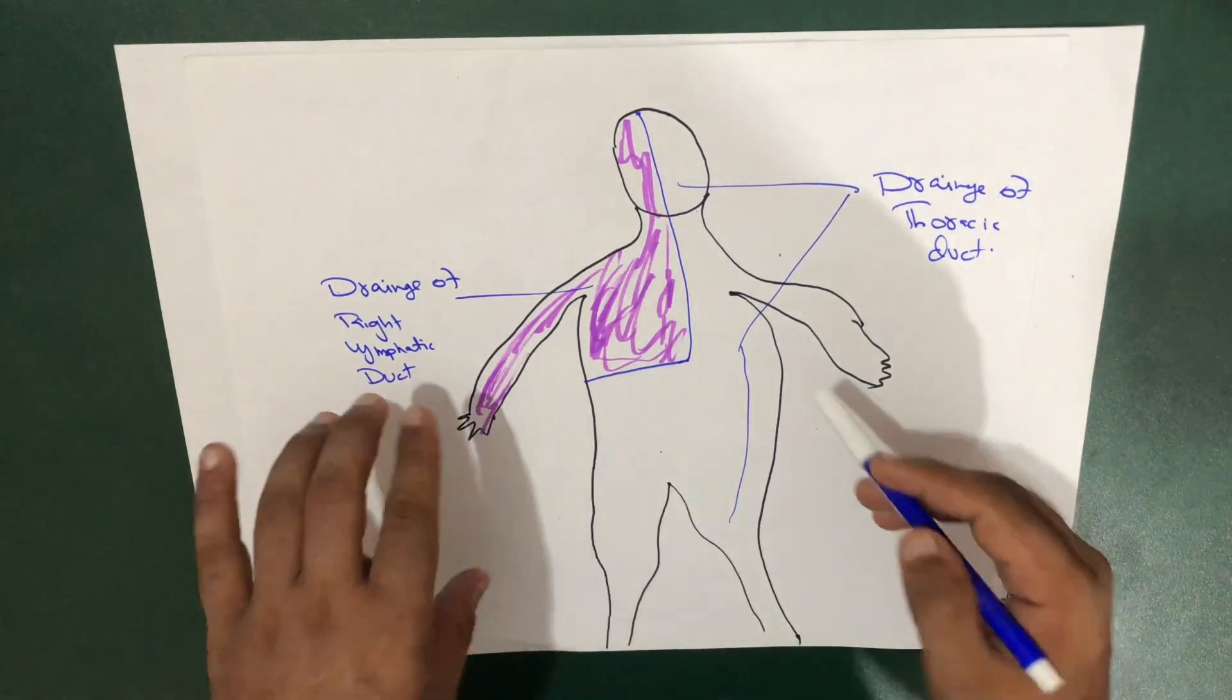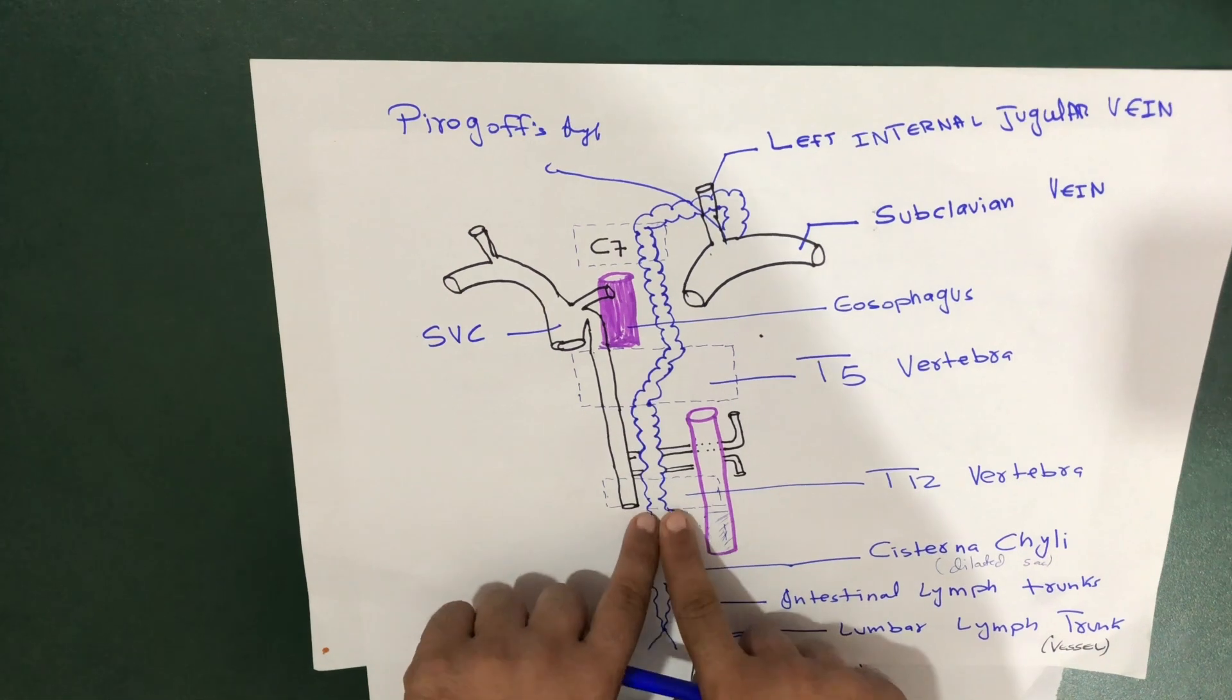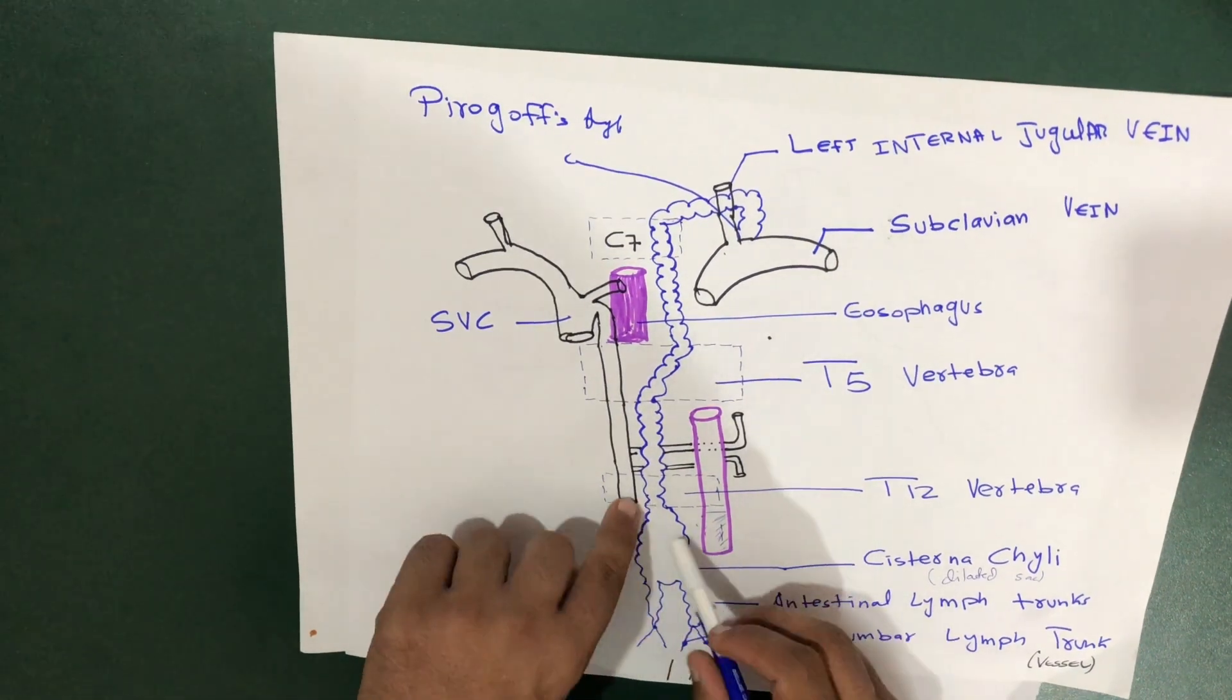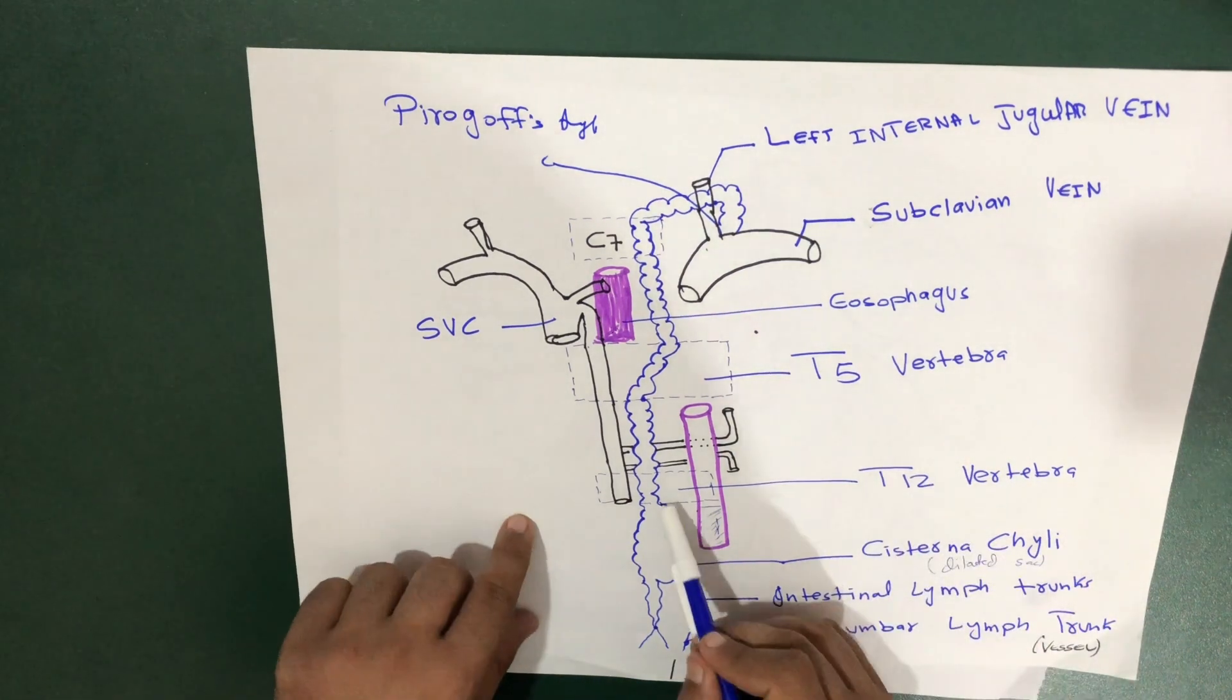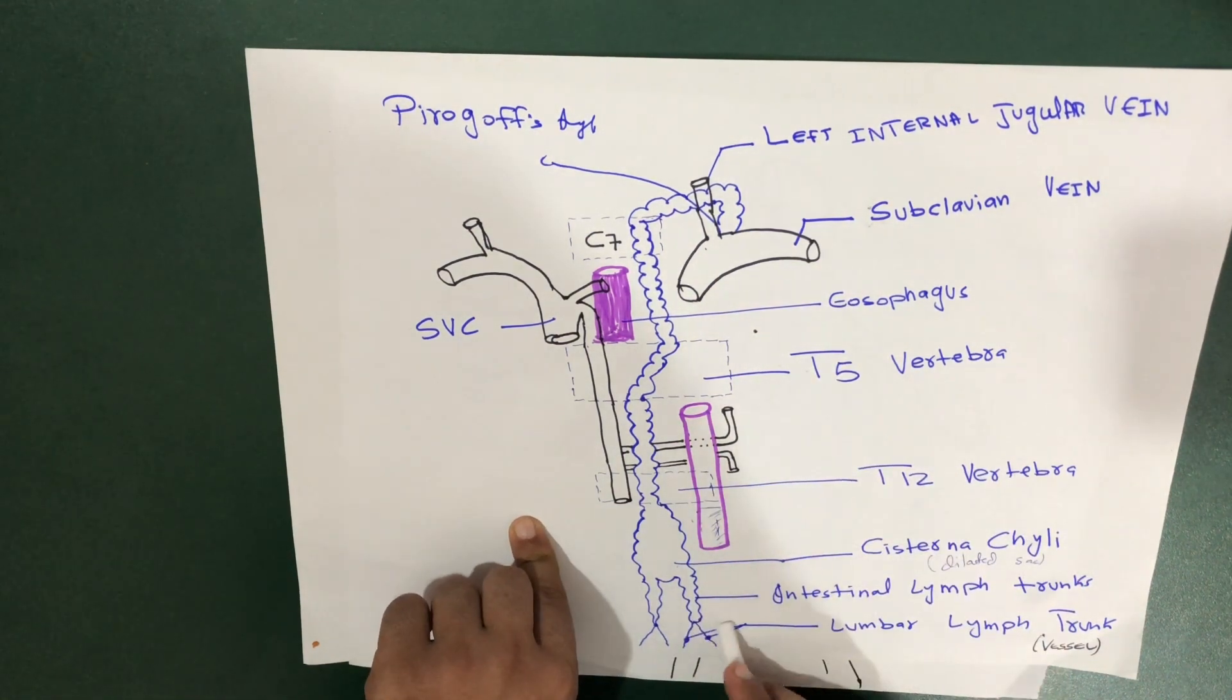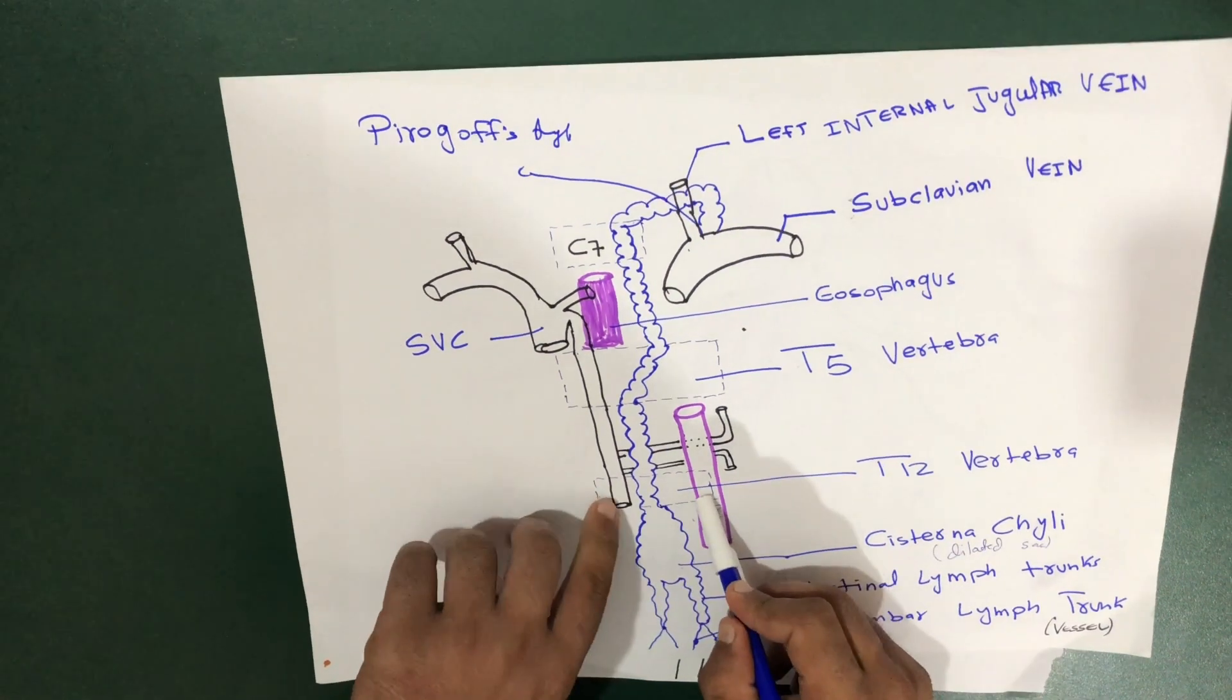The thoracic duct starts at the level of T12 vertebra. Do not say it starts from the lower limb—the lower limb has the lumbar lymph trunk, and the intestinal area has the intestinal lymph trunk. But the thoracic duct itself starts at T12.